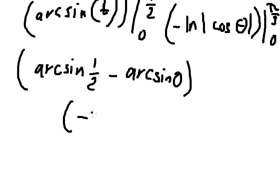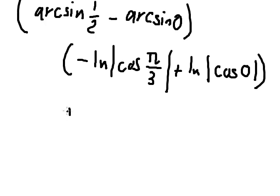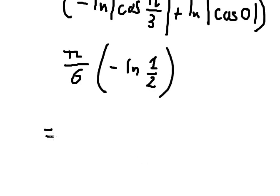So this one, we have pi over 6. This one we have negative ln of 1 over 2, and now we can put like this.